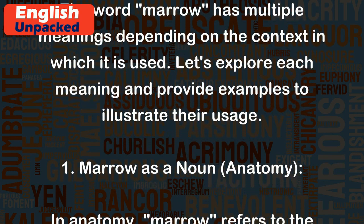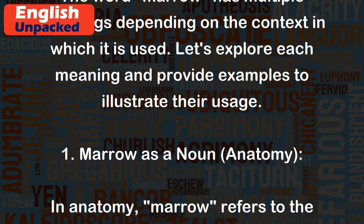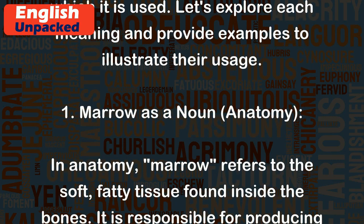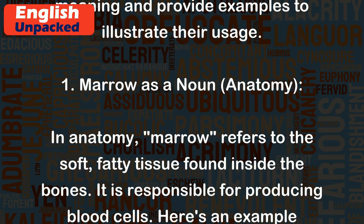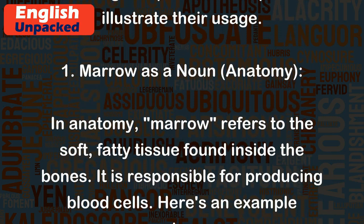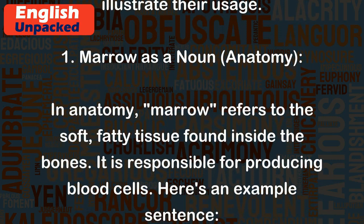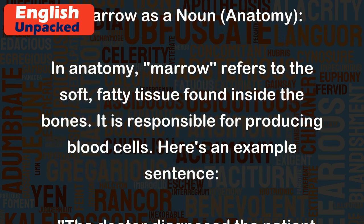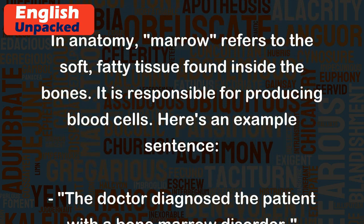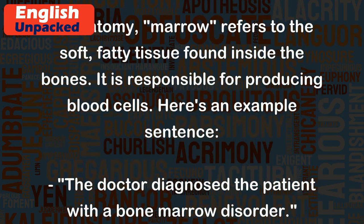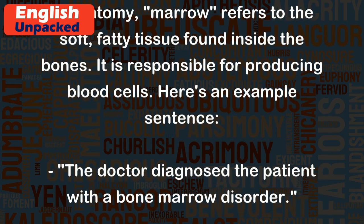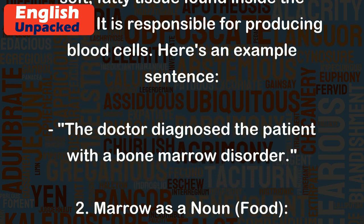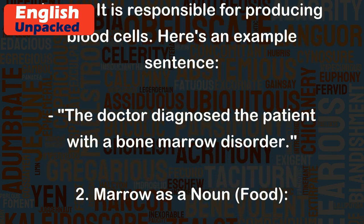1. Marrow as a noun — anatomy. In anatomy, marrow refers to the soft, fatty tissue found inside the bones. It is responsible for producing blood cells. Example sentence: The doctor diagnosed the patient with a bone marrow disorder.